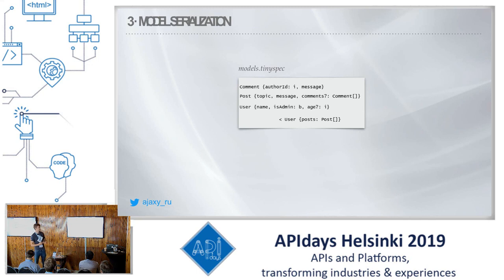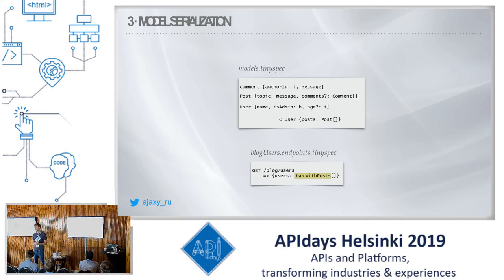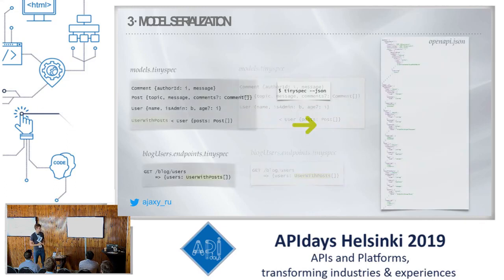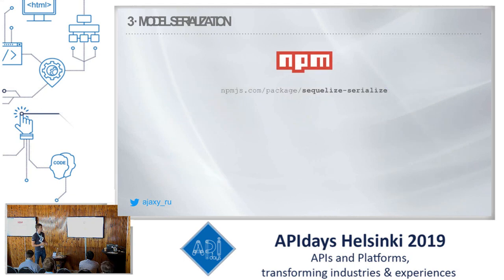We have three simple models: comment, post, and user. You can notice that post already has comments associated to it. We also have a new model called 'UserWithPost' that extends user and adds an additional property, 'posts', which contains an array of posts. We also have a simple endpoint that will return users with the new model. The generated OpenAPI JSON is even bigger and keeps growing.